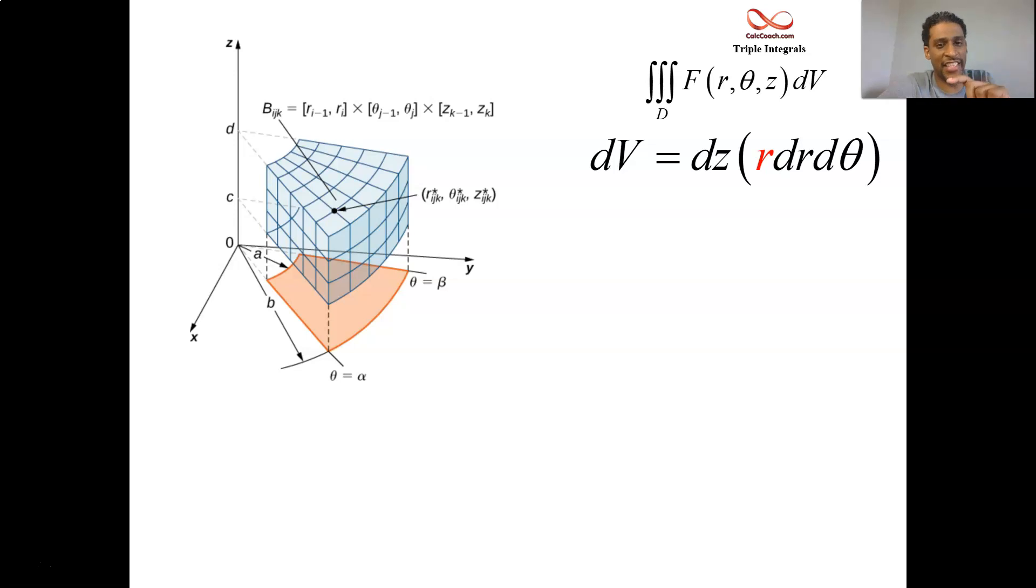So r dr d theta dz. It's a product of three dimensions to give you the volume of the little cuboid. That's another way to see the fact that the r is in there.